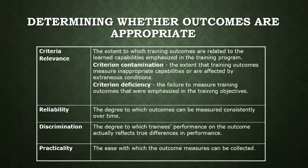When creating outcomes, we need to make sure they are measuring whether or not the program is effective. We need to think about the relevance of those outcomes — are they related to the learned capabilities emphasized in the training program? How reliable are those outcomes — if we gave a test, would it measure whether they actually learned something? Next is discrimination — if I score an A and you score a C, does that mean I learned more? Then practicality — how easily can we actually collect and measure these, or is this process too cumbersome and time-consuming?